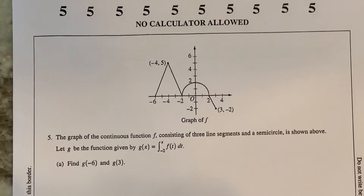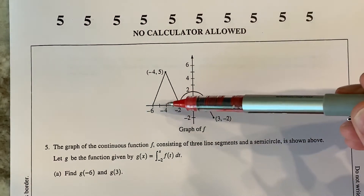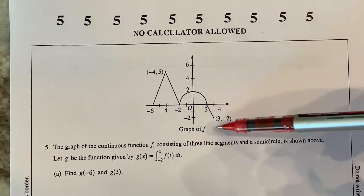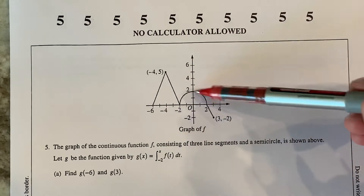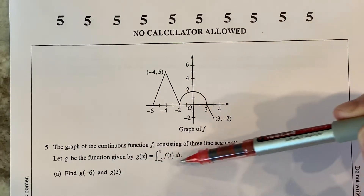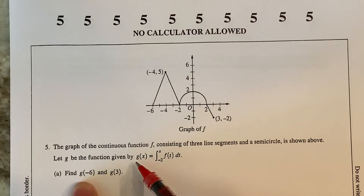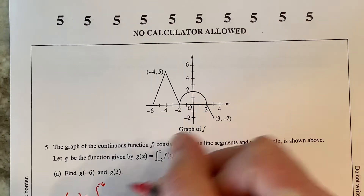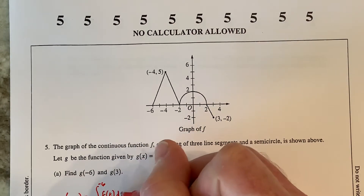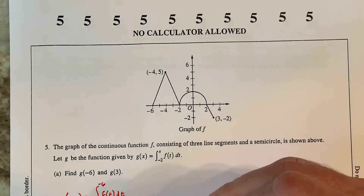Moving to number five. Number five gives you a diagram asking some questions. The graph of a continuous function F consists of three line segments and a semicircle. G is the function defined as the integral from negative 2 to x of F. For G of negative 6, I plug in negative 6 — so what is the integral from negative 2 to negative 6 of F? I'm finding area from a picture, going from negative 2 to negative 6, which is going to the left.